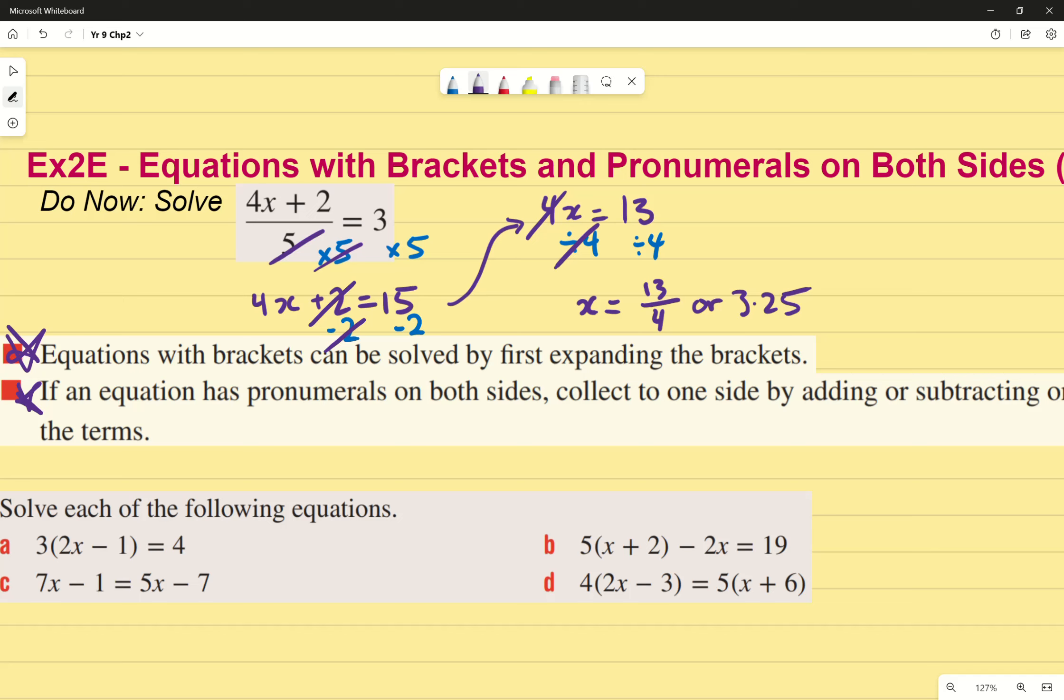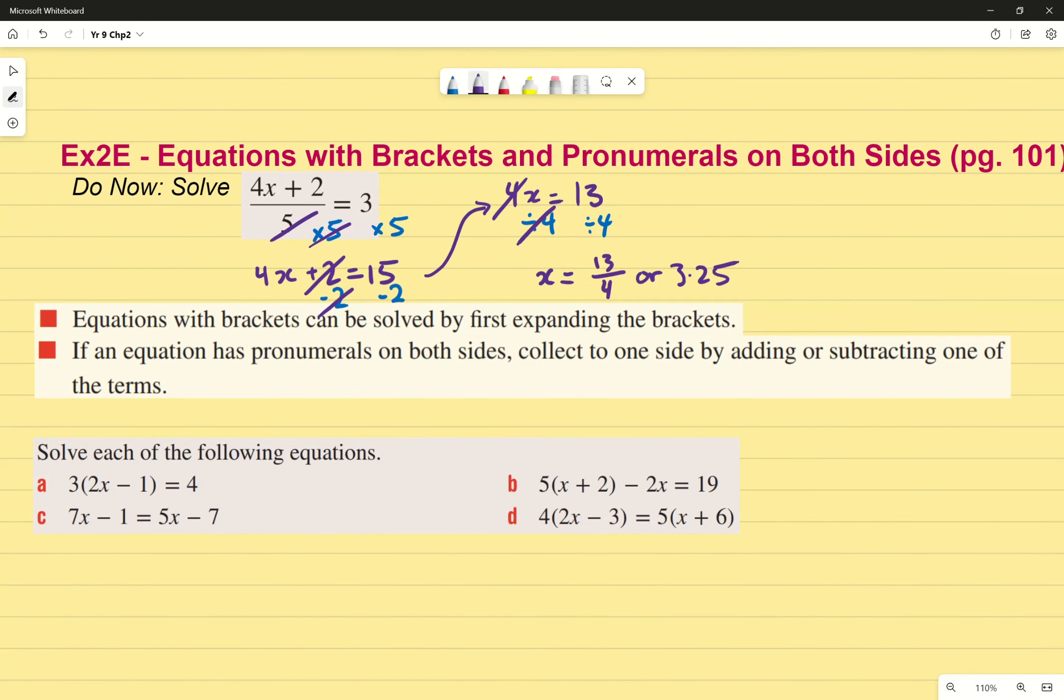So equations with brackets we can easily solve them, we just need to take them out of the brackets. And to do that we do stuff that we did in exercise 2C, which is just expanding our brackets. If an equation has pronumerals on both sides we collect to one side by adding, subtracting or whatever it is to the terms. Right, that just makes it easy for us to move around. Now on paper it sounds really difficult but when we give it a shot it's pretty straightforward, it's the exact same thing we've done beforehand anyway.